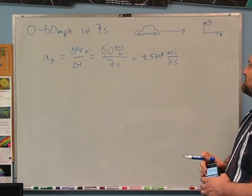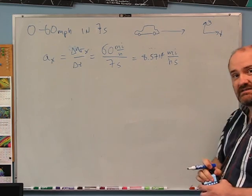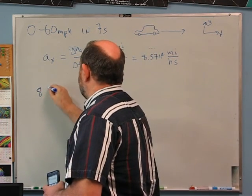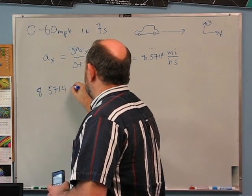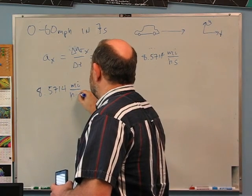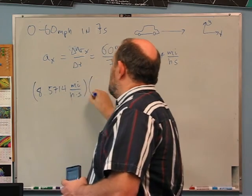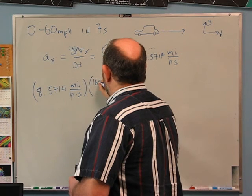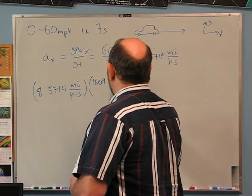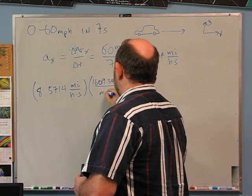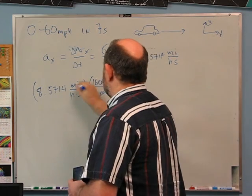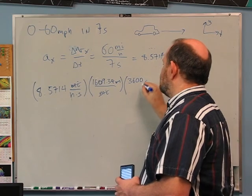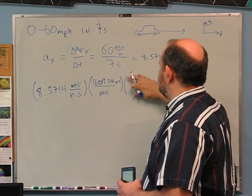That's miles per hour per second, but that's not the unit we want. We really want this in meters per second squared, so let's do the unit conversion. We have 8.5714 miles per hour per second. I looked up 1609.34 meters in a mile, so we can cancel miles.